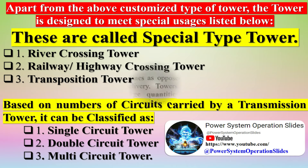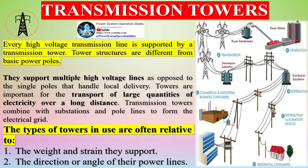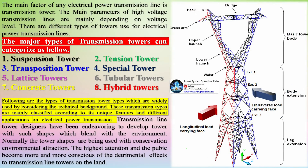Every high-voltage transmission line is supported by a transmission tower. Tower structures are different from basic power poles — they support multiple high-voltage lines as opposed to single poles that handle local delivery. Towers are important for the transport of large quantities of electricity over long distances. Transmission towers combine with substations and pole lines to form the electrical grid.